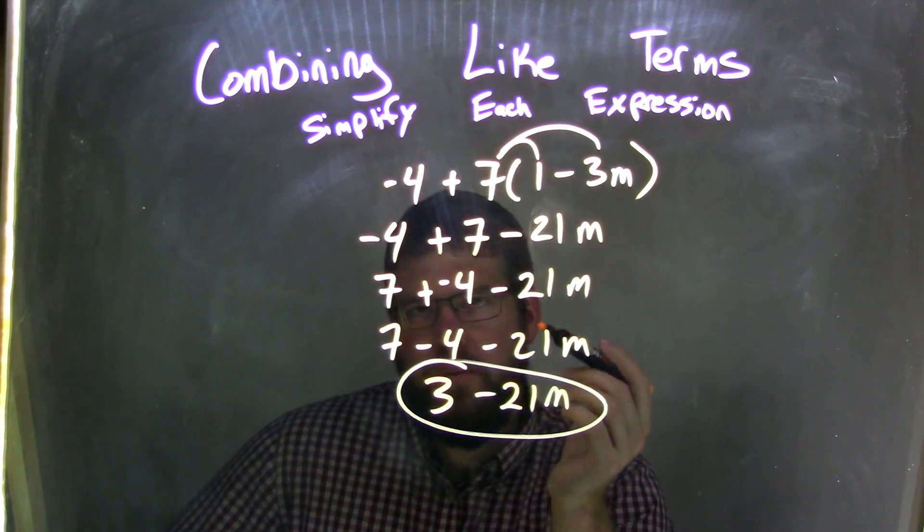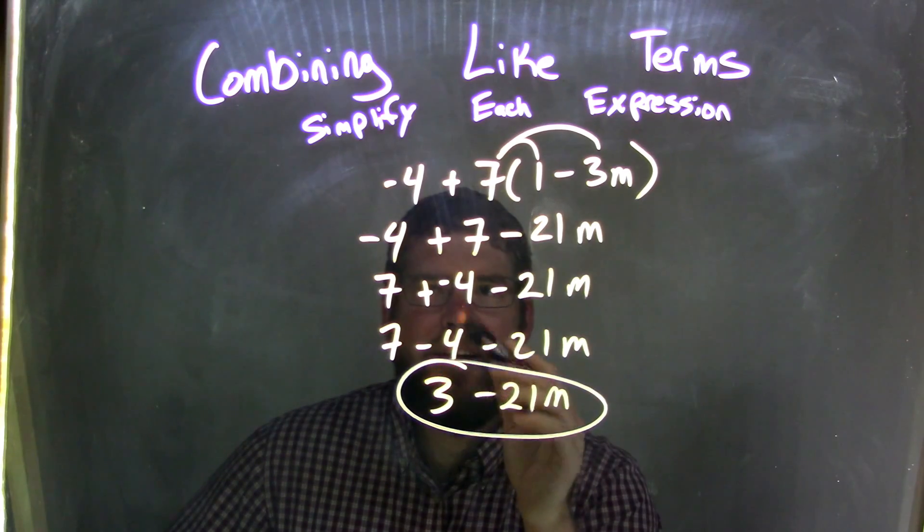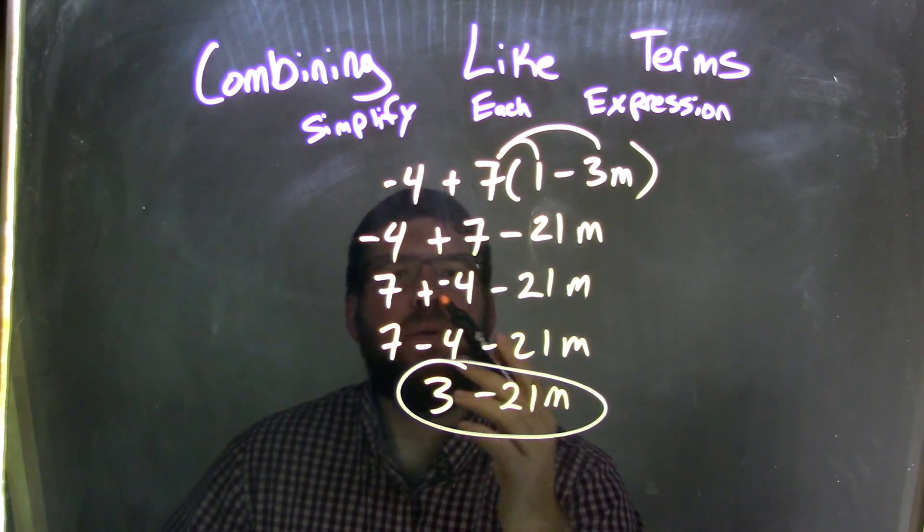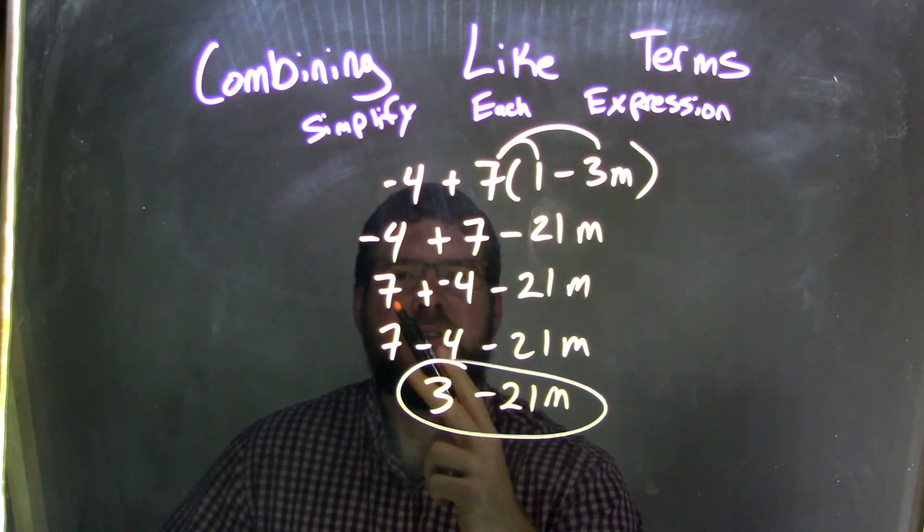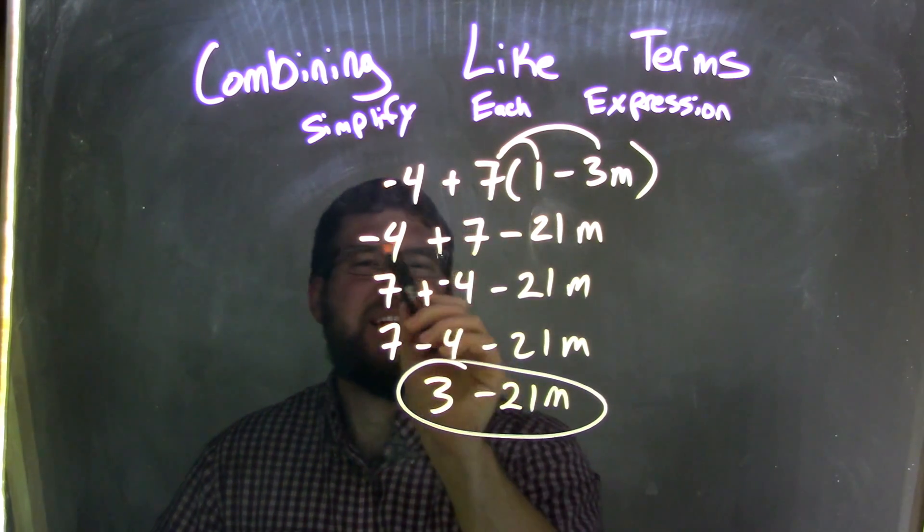Right there, some of you, and hopefully, you can recognize that negative 4 plus 7 is 3. If not, that's okay. We use the commutative property again to rearrange this 7 plus a negative 4. That's kind of like a negative 4 here. Minus 21m.